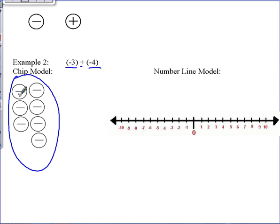What is the value of these negative chips? Negative 1, 2, 3, 4, 5, 6, 7. So our value or sum is negative 7.